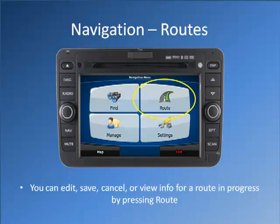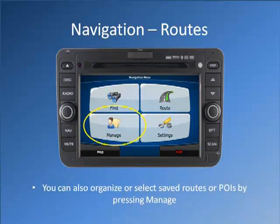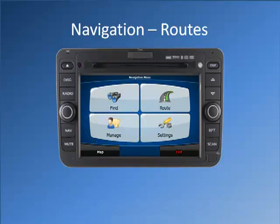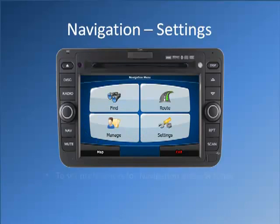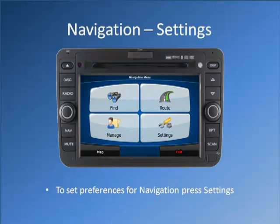You can edit, save, cancel, or view information for a route in progress by pressing Route. You can also organize or select saved routes or points of interest by pressing Manage. To set preferences for navigation, press Settings.